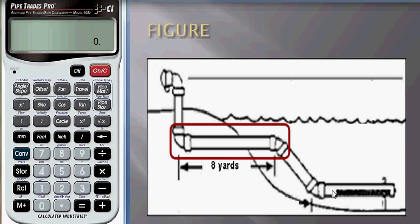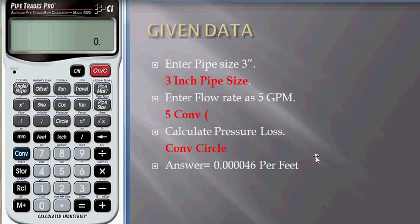So this is the figure for the question. We need to find out pressure loss for length of 8 yards which is shown. Let's see the calculations using Pipe Rates Pro.